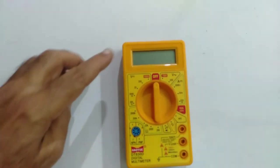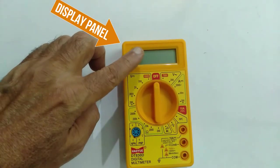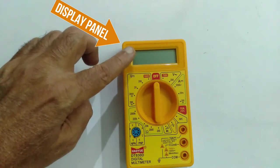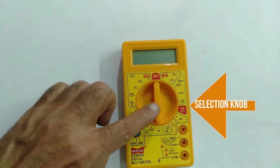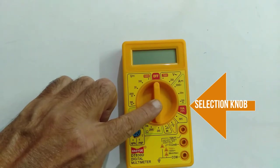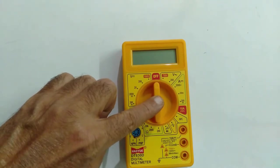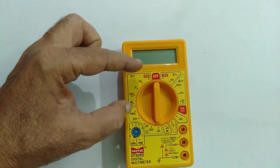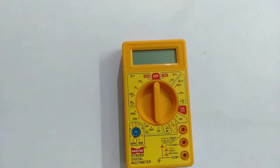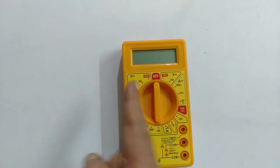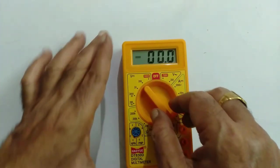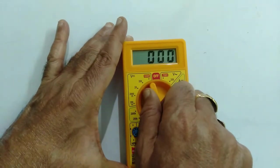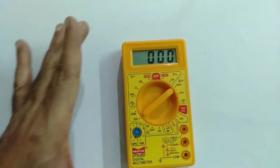This is called the display panel where you can see the digits. The reading will appear here and this is called the selection knob. If you want to measure the potential difference, you have to operate it in the potential difference section. If you want to measure the current, you have to put it in ammeter division. If you want to measure DC voltage, you move in this direction, and if you want to measure AC voltages, you keep it in this direction.